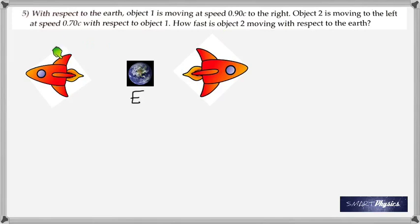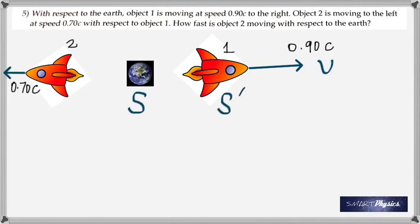The first thing you have to do in a problem is identify the S frame and the S prime frame. In this case the earth is the S frame, and this rocket one or particle one is the S prime frame.